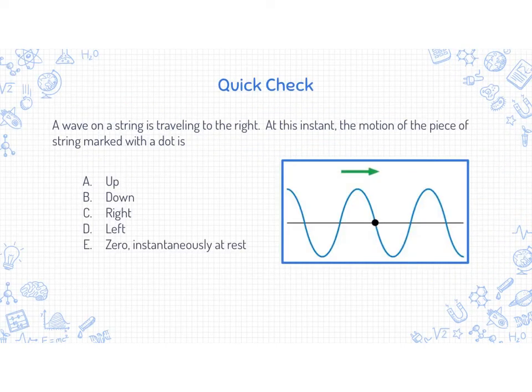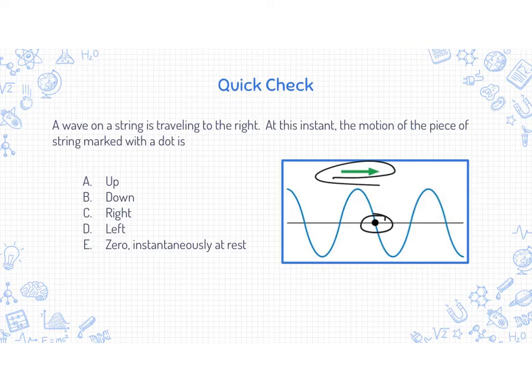So we have a quick check here. We're looking at a point on a string as the wave moves to the right. This point on the string experiences the energy, and what's behind it is going to move through it — the portion of the wave here is going to move through that point and cause it to go up.